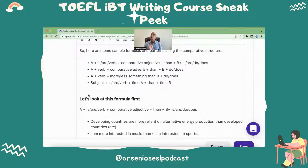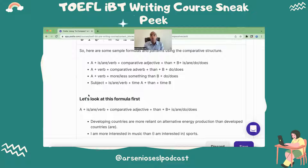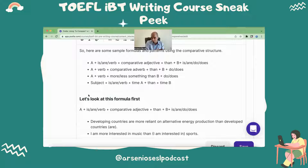A plus is our verb plus a comparative adjective plus then plus B is our do/does. I know it sounds like calculus. Calm down. Here we go. Developing countries is the A — are more reliant. So subject plus the verb plus the comparative, on alternative energy production. Now that's the other subject, and then we're going to use plus then — developing countries — we have to put the 'are' at the end, we're not just going to use 'countries'. So I'll repeat that in its entirety.